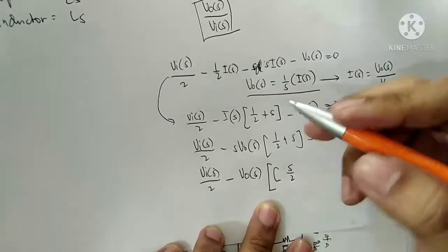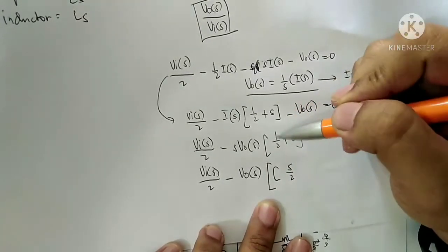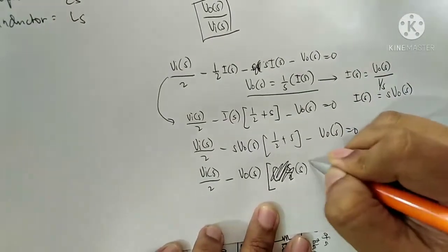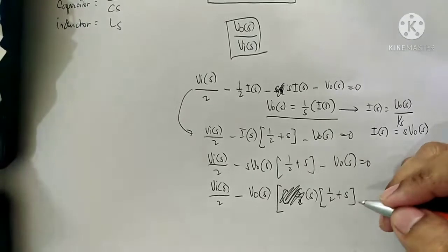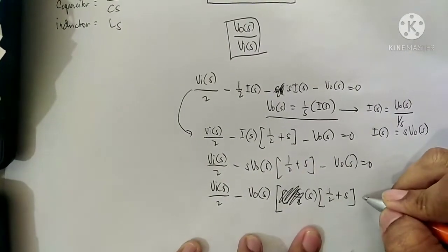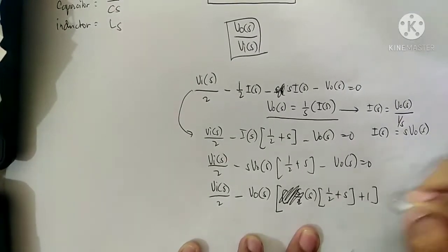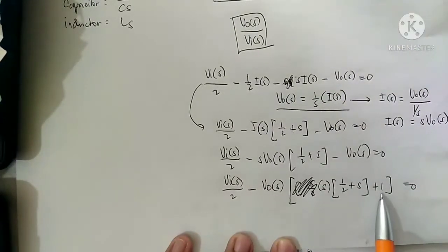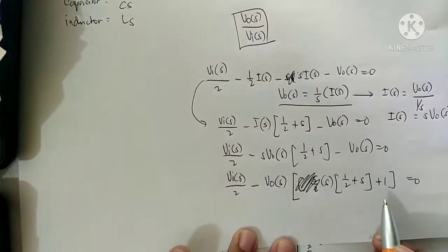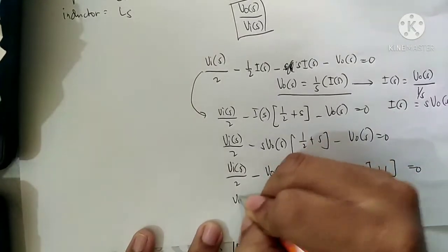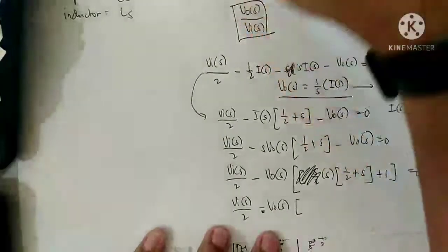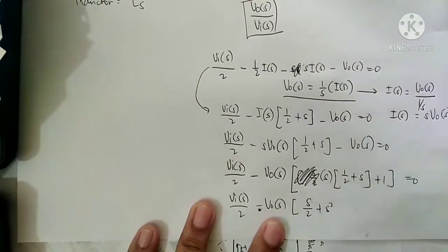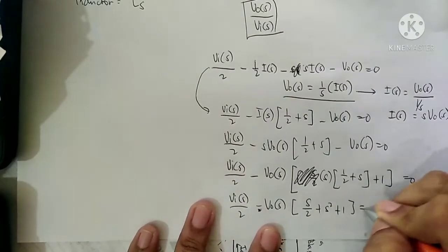Distributing S over 2: S times one-half plus S, and then plus 1, equal to zero. Factor out and simplify: minus Vo(S), distribute, so therefore this is S divided by 2, plus S-squared, plus 1, equal to zero.